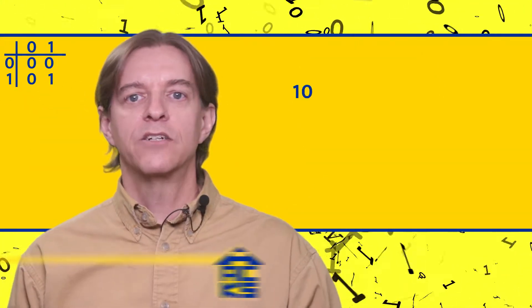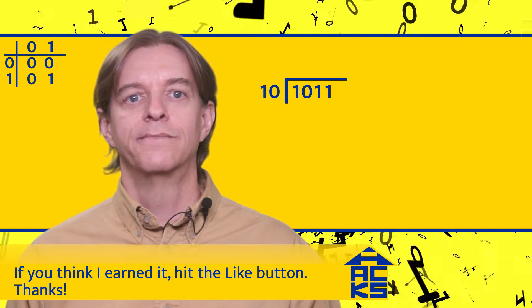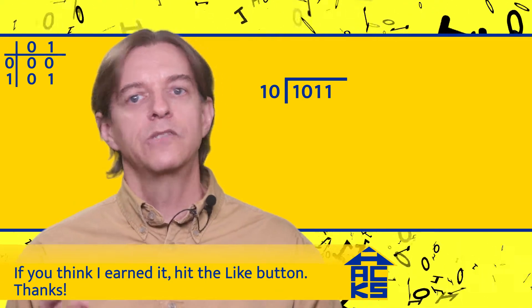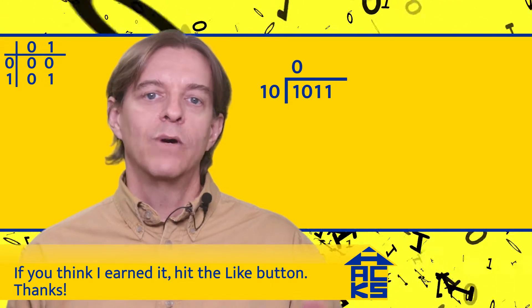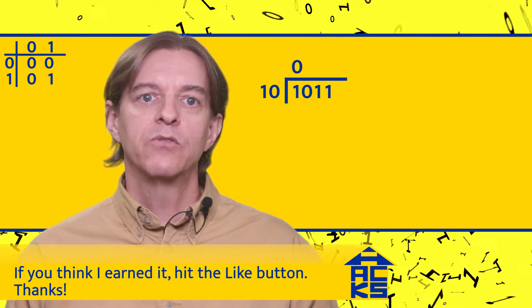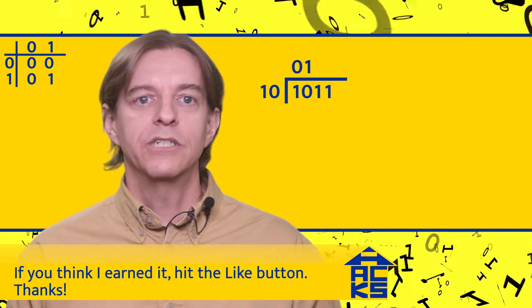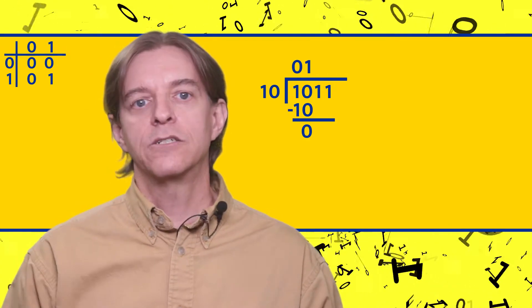Let's look at another example of 1011 divided by 10. 10 is greater than 1, so we start with a zero. 10 is equal to 10, so we put a one in the quotient and a 10 underneath, and subtract, giving us zero.